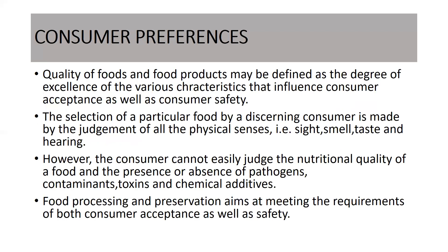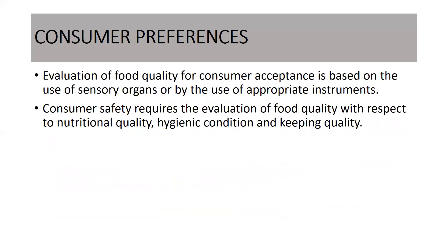Now, coming to consumer preferences. The quality of food and food products may be defined as the degree of excellence of various characteristics that influence consumer acceptance as well as the consumer's choice. The selection of a particular food by a consumer is made by the judgment of all the physical senses of sight, smell, taste, and hearing. However, the consumer cannot judge the nutritional quality of a food, nor the presence or absence of pathogens, microbes, chemical additives, etc. Food processing and preservation mainly aims at meeting the requirements of food consumer acceptance as well as their safety. Therefore, evaluation of food quality for consumer acceptance is based on the use of sensory organs or appropriate instruments. Consumer safety requires evaluation of food quality with respect to nutritional quality, hygiene condition, and keeping quality.